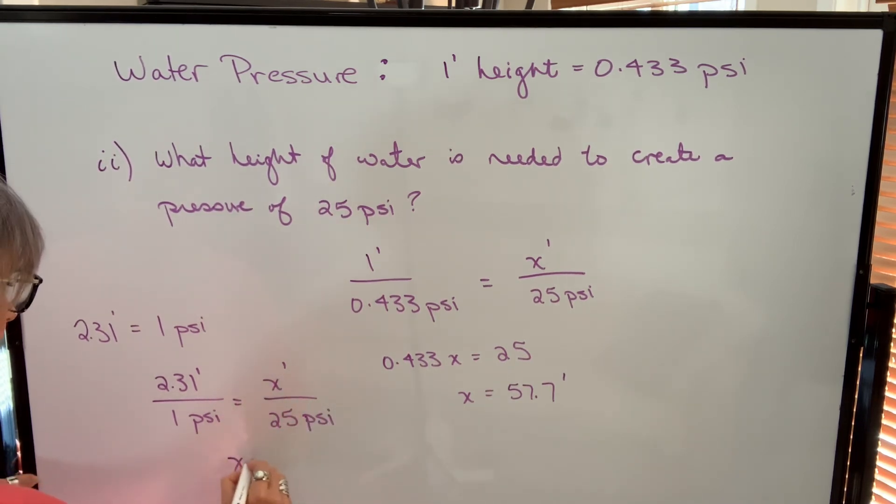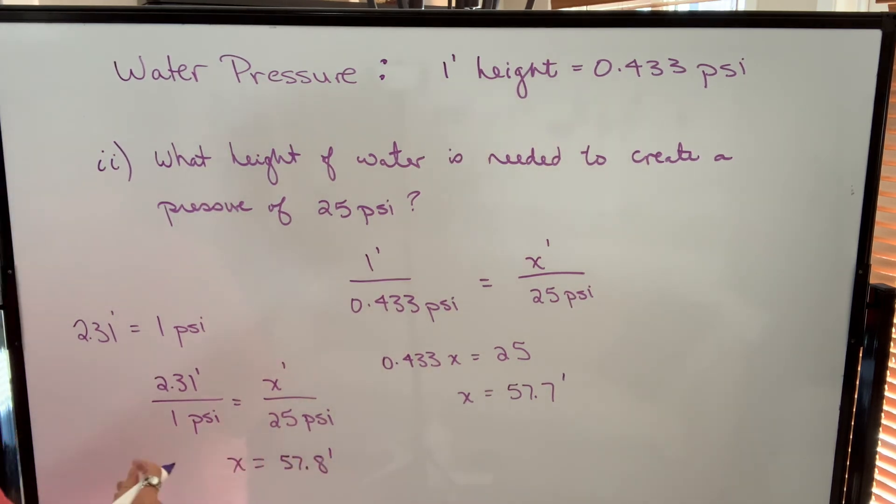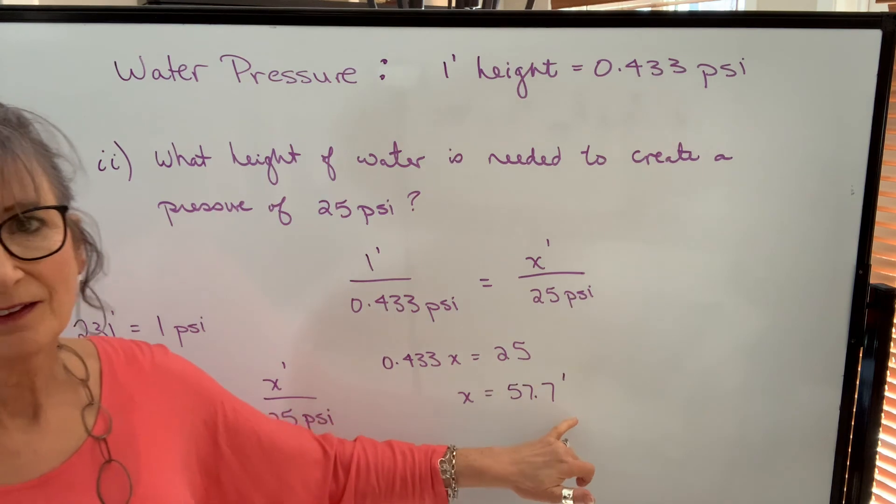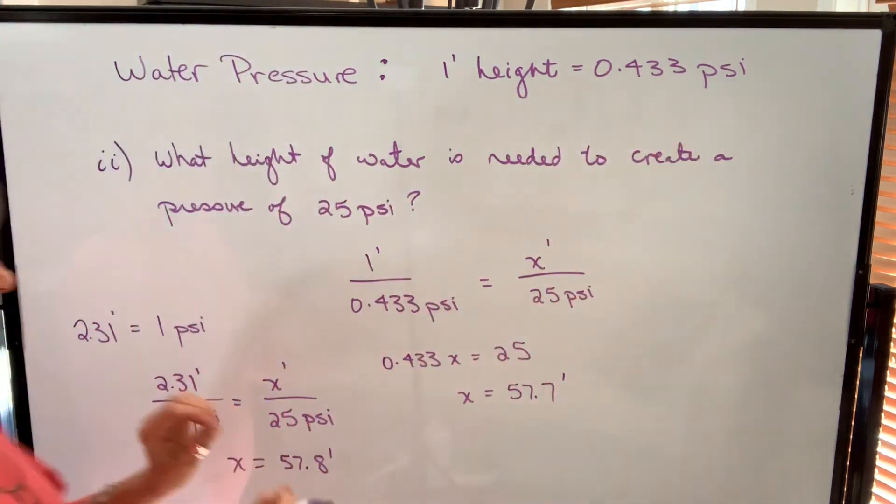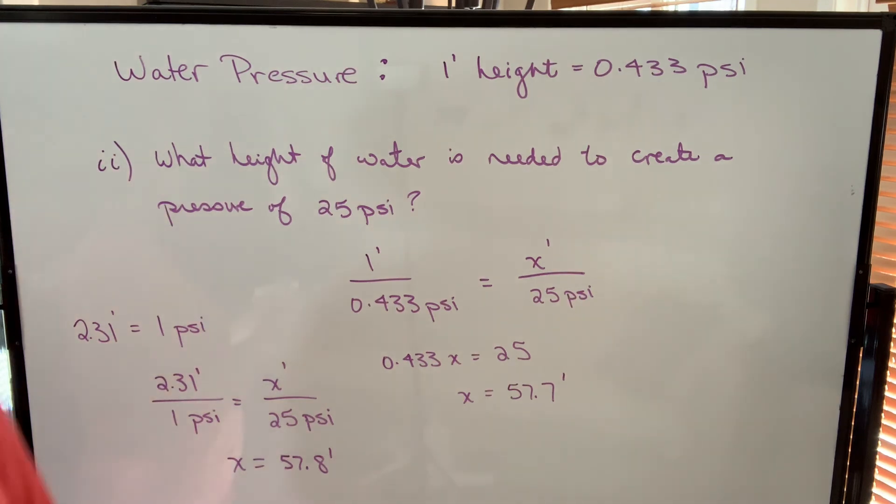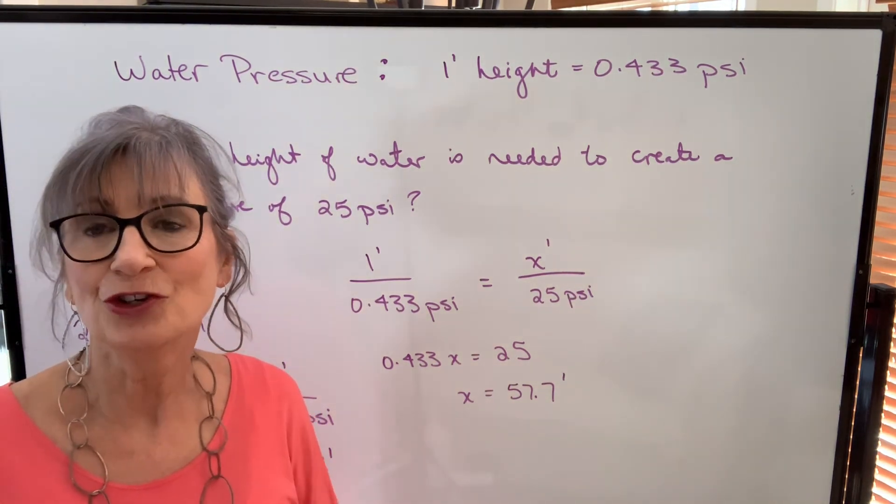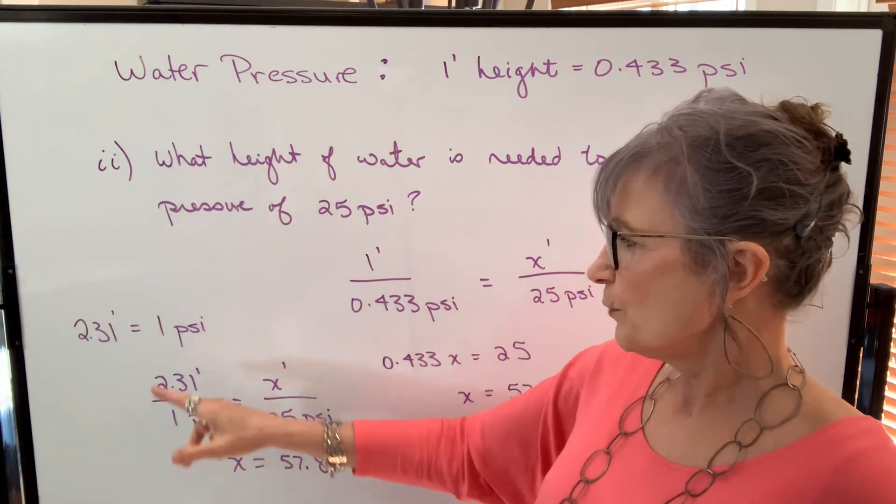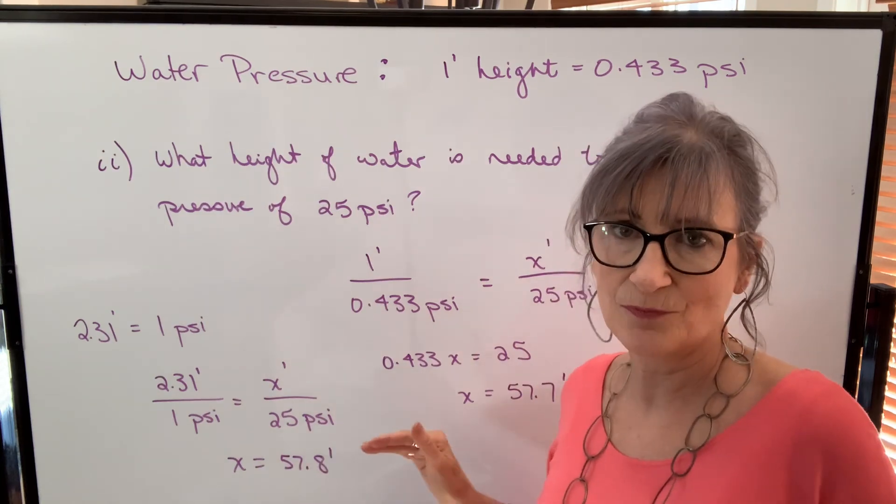Cross multiply, x is equal to 57.8 feet. Slight difference in answers, but that's because this number is rounded off and so is this number. So when you use a rounded off number to do multiplication or division, you're not going to get exact answers. So whether you use this shortcut or this shortcut, you should get close to the same result.